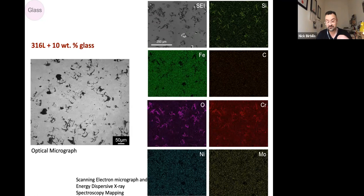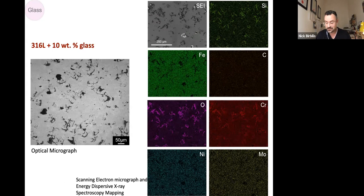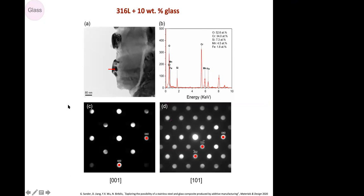And interestingly, this worked. What you can actually see there, and this worked for 25 weight percent glass too, which was nearly 50 percent volume fraction of glass. What you see on the left is an optical micrograph and the accompanying SEM images and EDX maps. What looks to be pores on the left, if you look on the right, is actually a silicon rich phase.